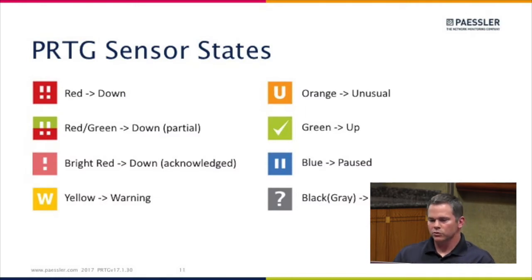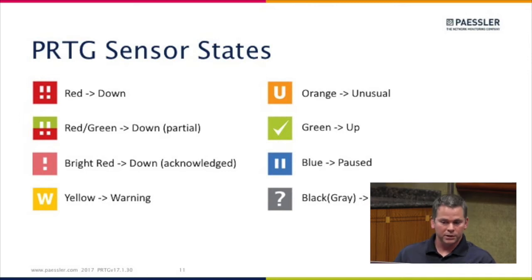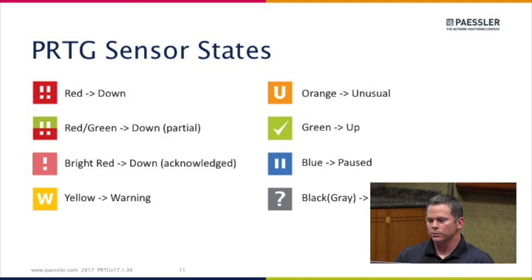As we step into the demo this will make more sense, but there are different sensor states. There are obvious ones: red, yellow — down and warning. Blue is paused, and orange is for unusual, which is related to unusual detection. From the point of install, PRTG establishes a baseline across all sensors and looks for anomalies — unusual behavior — which could be high ping times, traffic, or CPU loads.